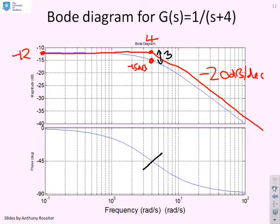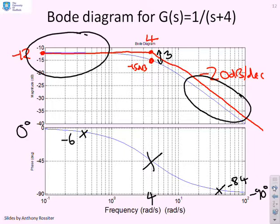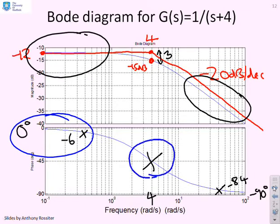For the phase of G(s) = 1/(s + 4): the phase is −45 degrees at ω = 4, 0 degrees at low frequencies, −90 degrees at high frequencies. A decade below (ω = 0.4) gives −6 degrees; a decade above (ω = 40) gives −84 degrees. A smooth curve through these asymptotes and correction points shows the phase rolling from 0 to −90 degrees.